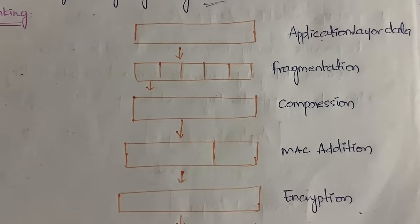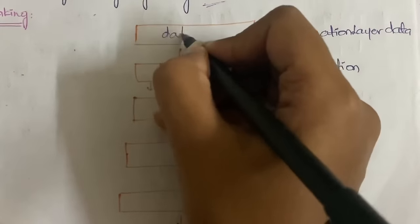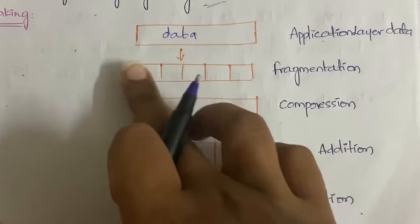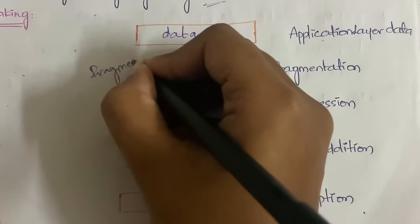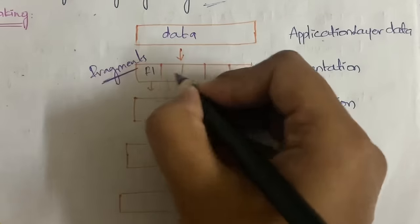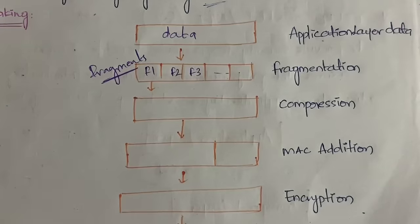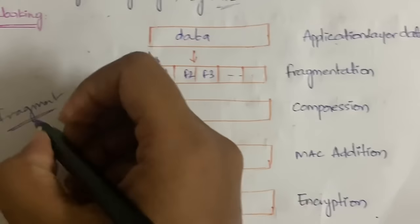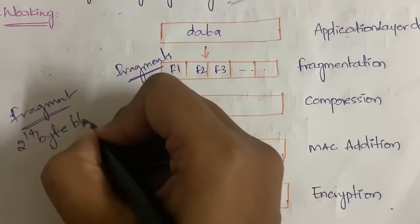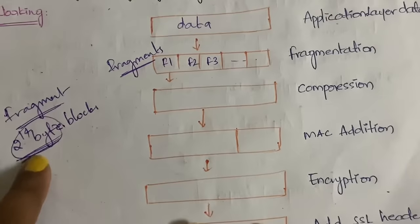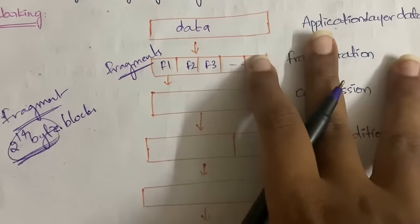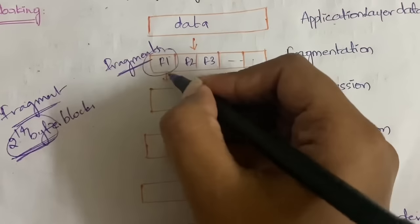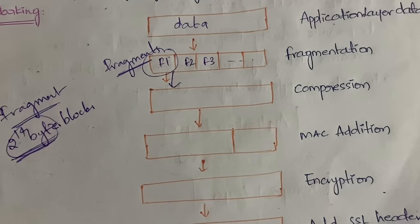When data is coming from the application layer, the application layer data is divided into a number of fragments - that process is called fragmentation. This is fragment one, fragment two, fragment three - based on the size of the data it is divided into fragments. The size of each fragment is 2^14 bytes, so you get each block with a size of 2^14. Based on the data size we divide it into the required number of fragments.